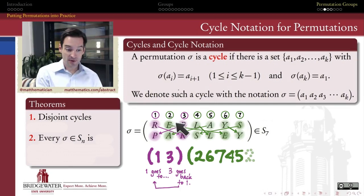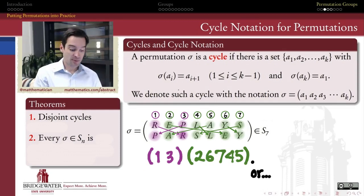So by tracing what happens to each of these elements as we go along, 2 goes to 6, and 6 goes to 7, and 7 goes to 4, and 4 goes to 5, and 5 goes back to 2 as soon as I've gotten back home. Now I know that I've completed my cycle, and I can finish. So I can express this permutation as a composition of two cycles. The 2 cycle 1, 3 that flip flops my R and my P, and then the 5 cycle 2, 6, 7, 4, 5 that describes what's happening to the remaining five symbols.